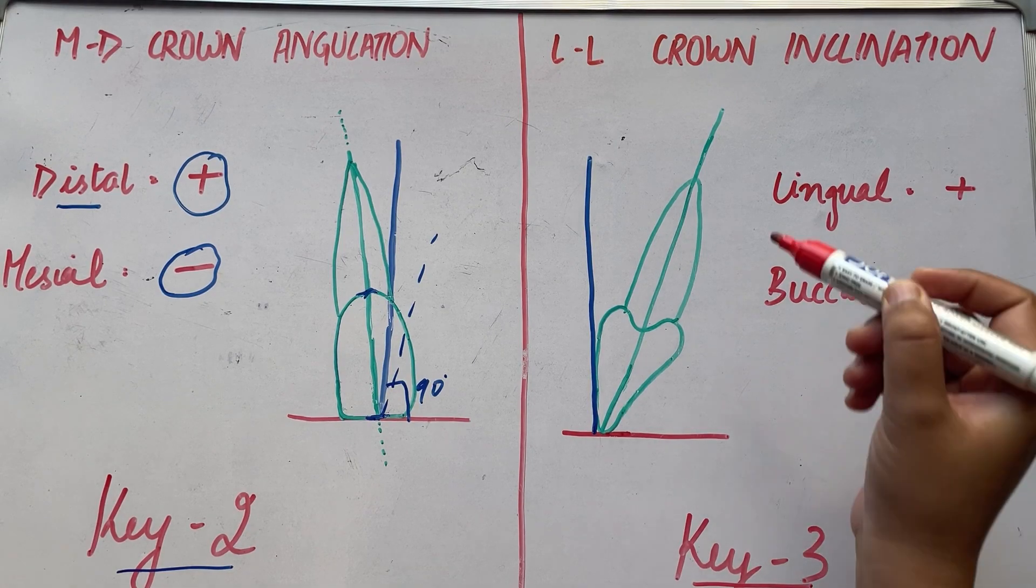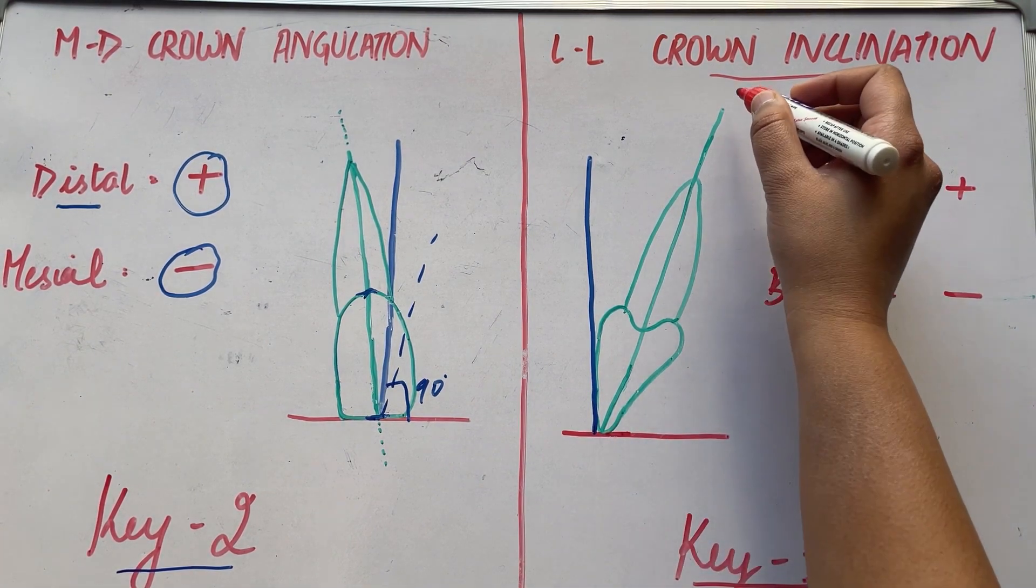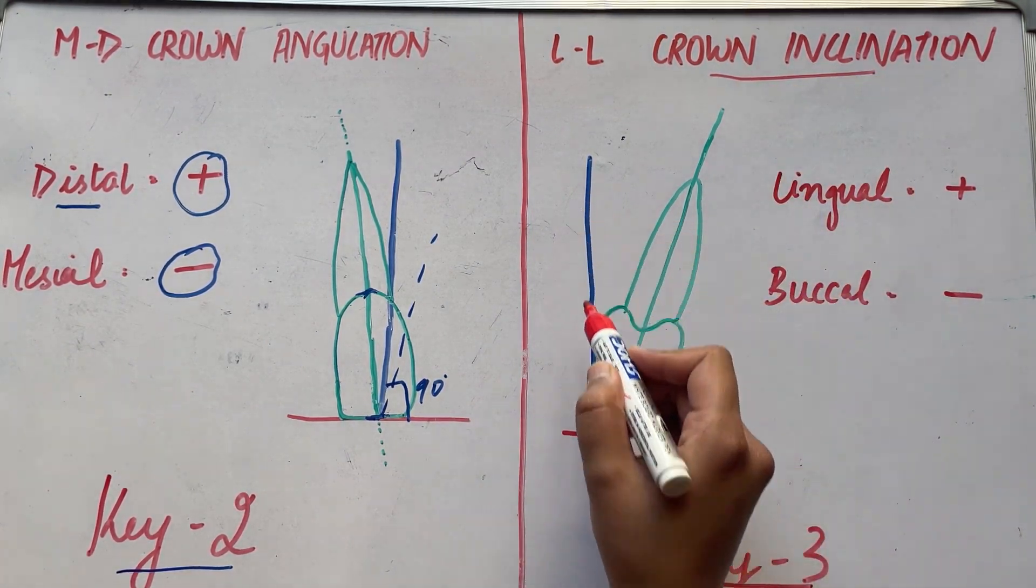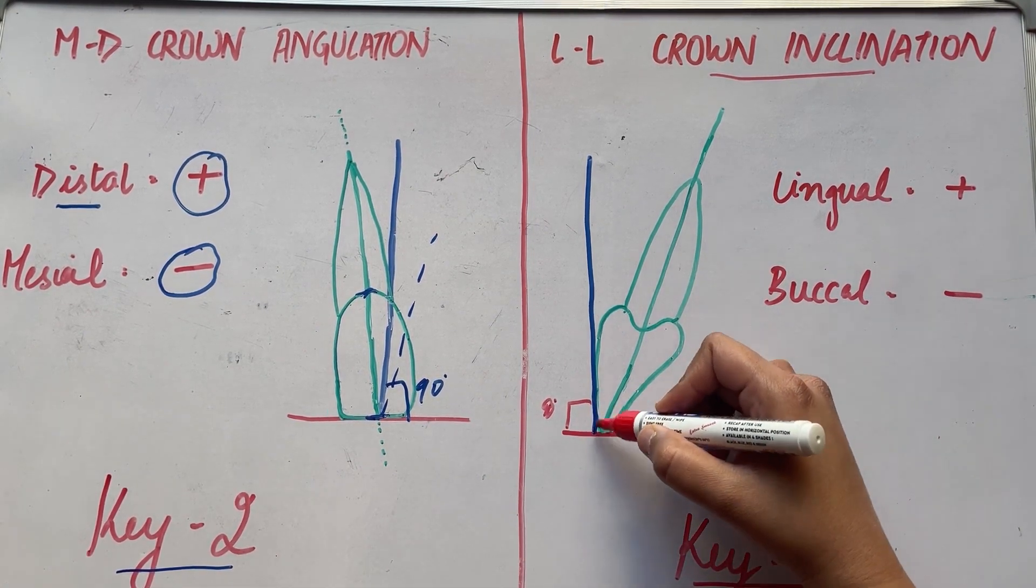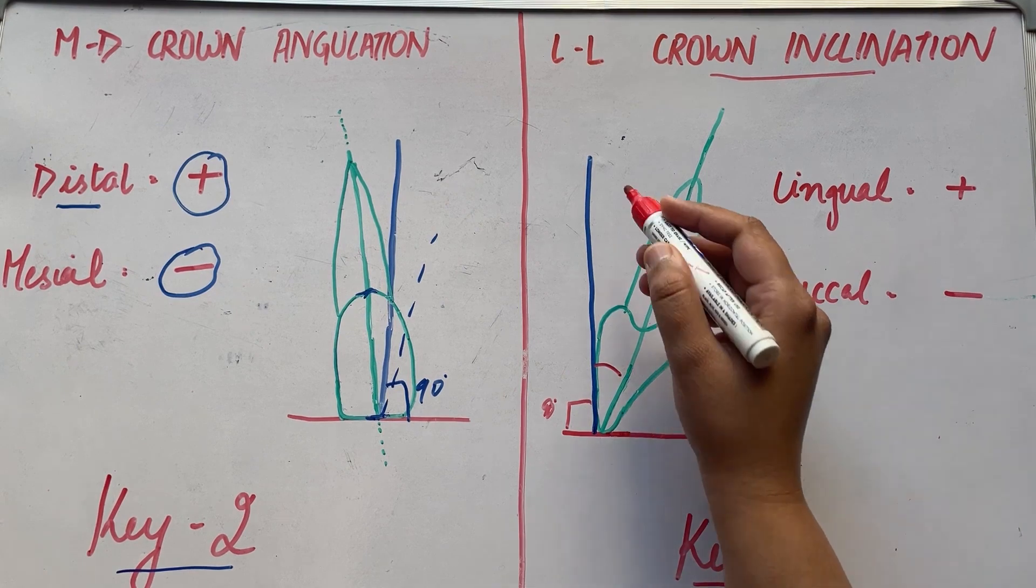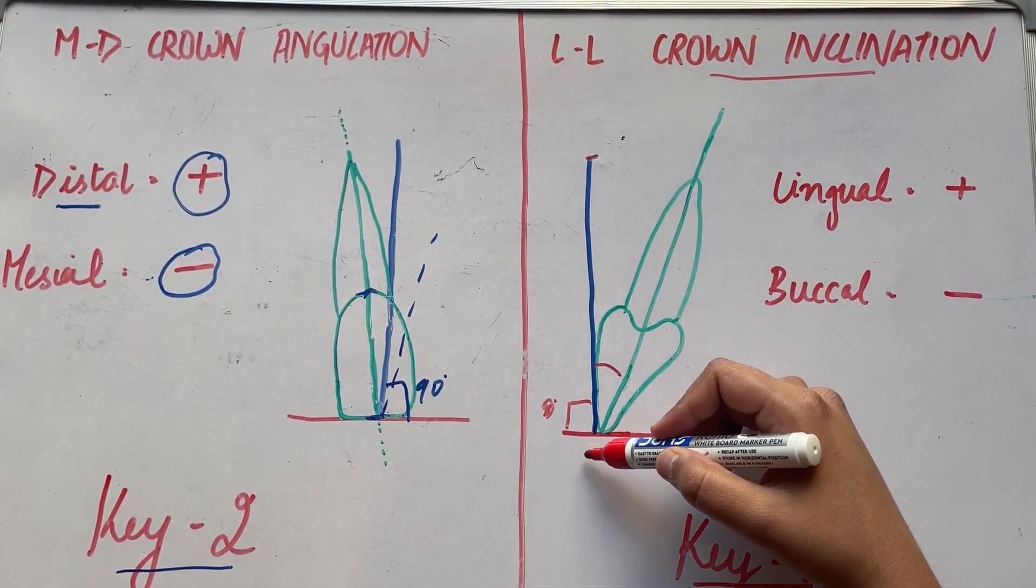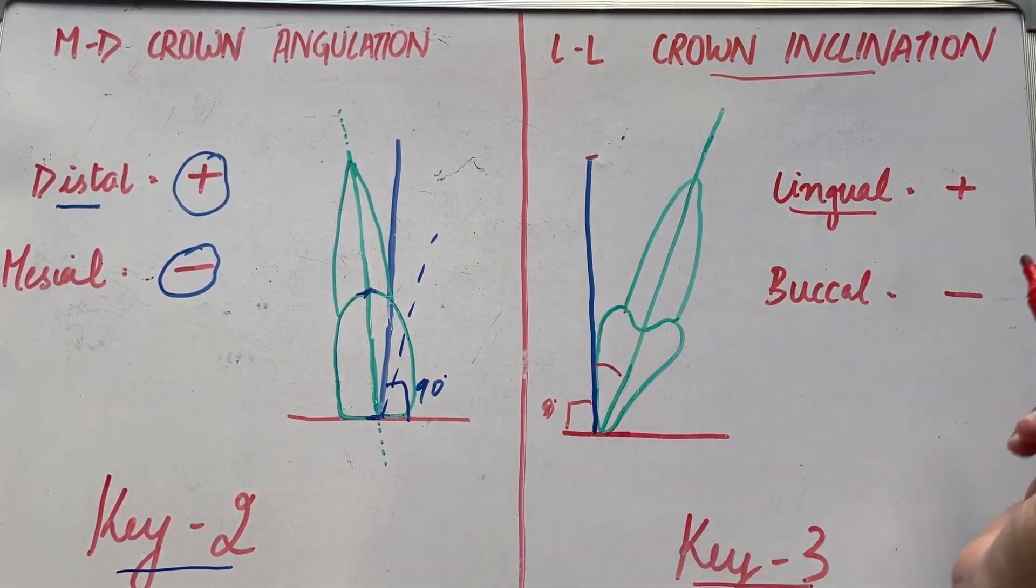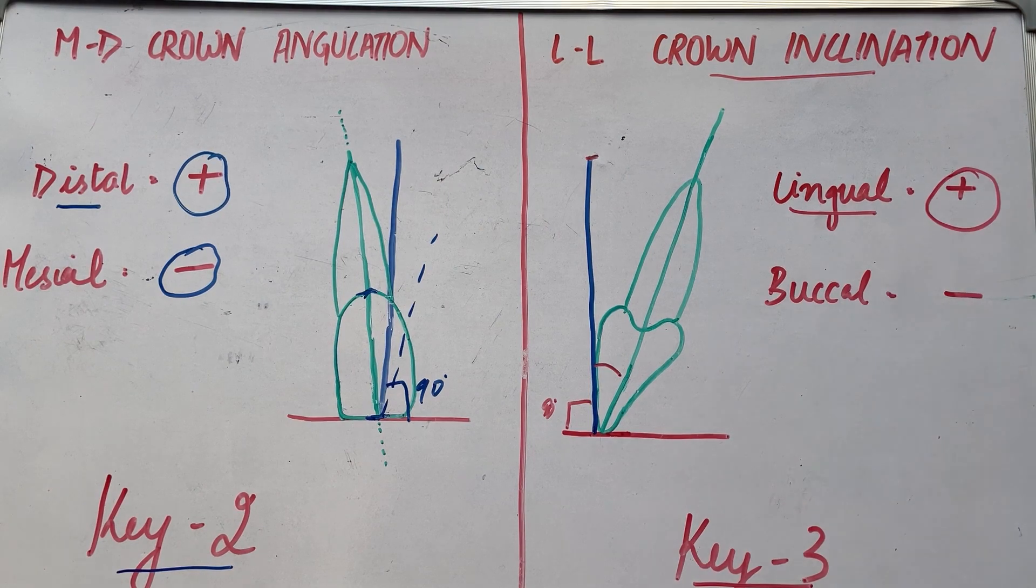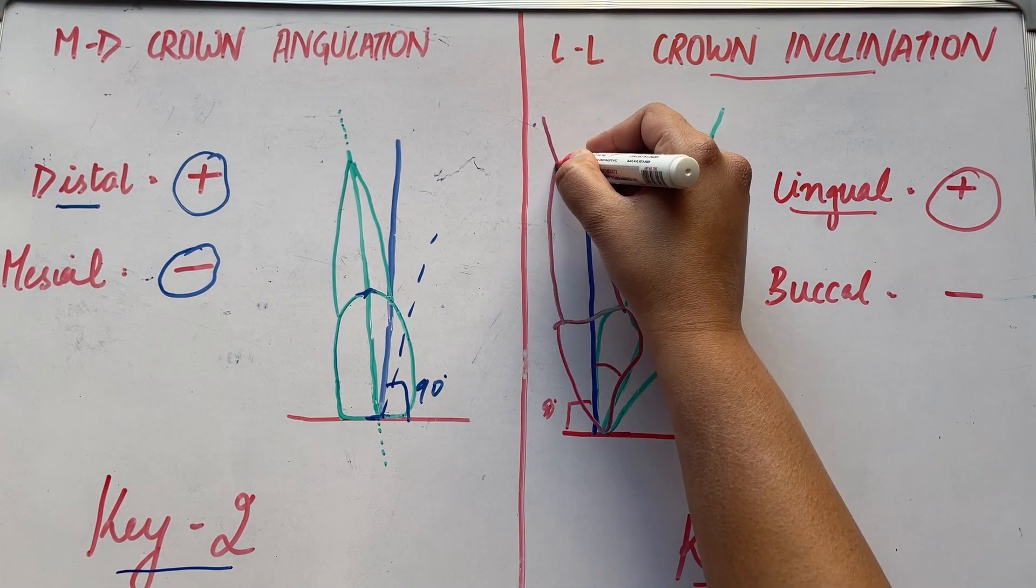Next is key 3. It is labiolingual crown inclination. Crown inclination is determined by the resulting angle between a line 90 degrees to the occlusal plane and a line tangent to the middle of the labial or buccal clinical crown. The crown of maxillary incisors are more positively inclined relative to a line 90 degrees to the occlusal plane. Consistent patterns see in most maxillary centrals having a positive inclination and mandibular incisors having a slight negative inclination.